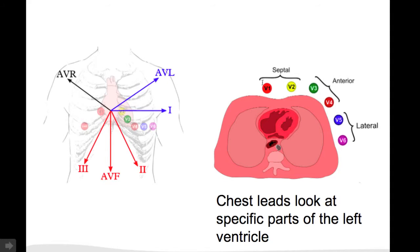Also V1 and V2 are close to the right ventricle, so any abnormalities in the right ventricle are most likely seen in V1 and V2. And also they are close to the atria.